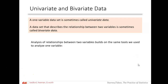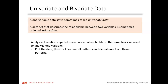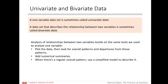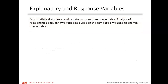The analysis of relationships between two variables builds on the same tools we use for one variable. That's what's nice about math — we build upon things we already know. We're going to be plotting the data, looking for the overall patterns, looking for any departures from those patterns like outliers. We'll figure out numerical summaries and use a simplified model to describe regular patterns. This chapter leads into interpolation and extrapolation — building models is one of the coolest things we can do in statistics.